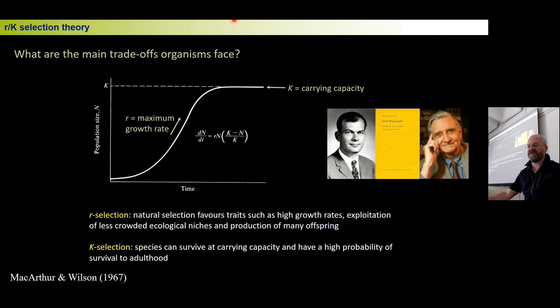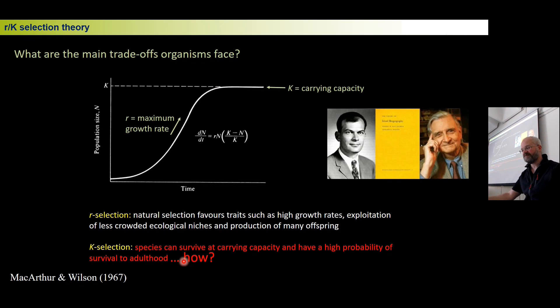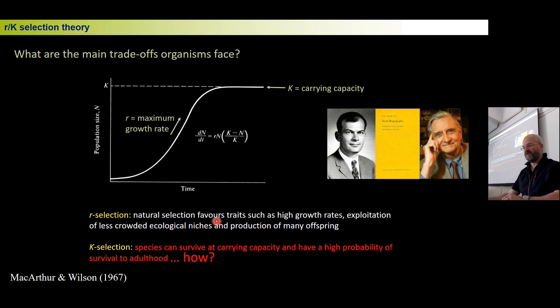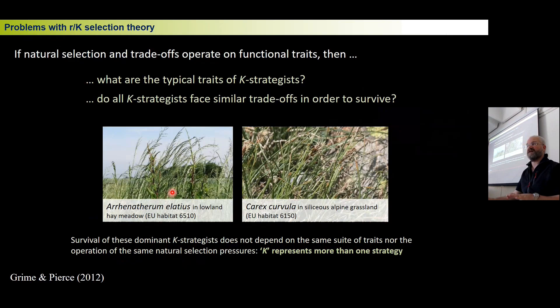Ecology has progressed since 1967. MacArthur and Wilson made a fantastic contribution, but there's one problem: when we say that K-selected plants survive at carrying capacity with a high probability of survival to adulthood, how do they achieve this? What is their phenotype, their functional traits? For r-selected plants it's easy — they're small, grow quickly, make seeds, make offspring. But for K-selected species we see a lot of variability. There are actually differences among K-selected species.